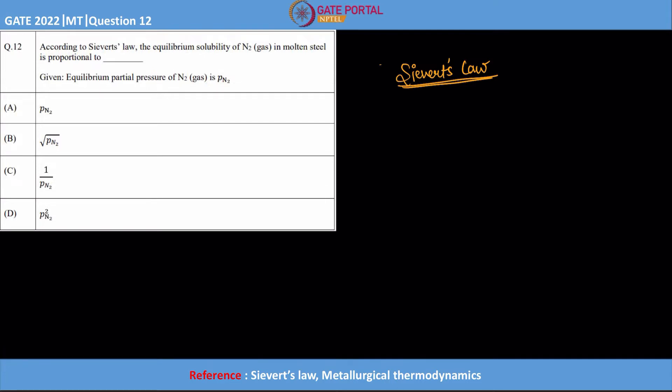If I want to write this in terms of a mathematical equation, Sievert's law tells that the solubility of nitrogen in this particular case is directly proportional to the square root of partial pressure.